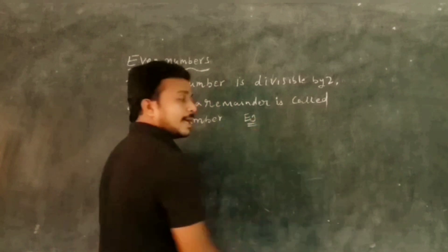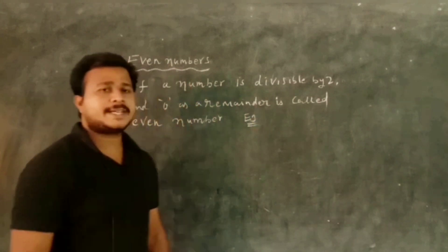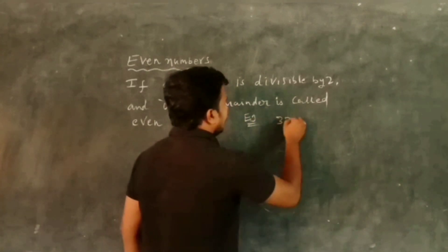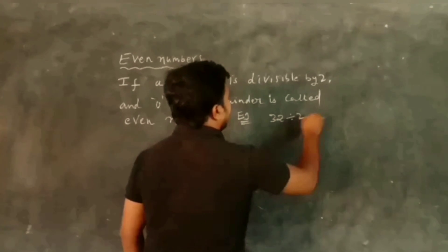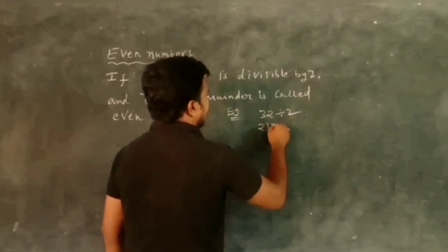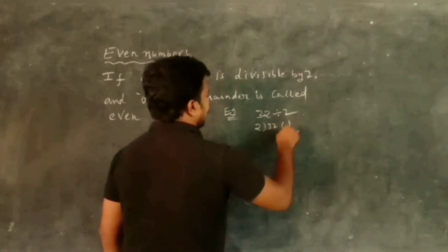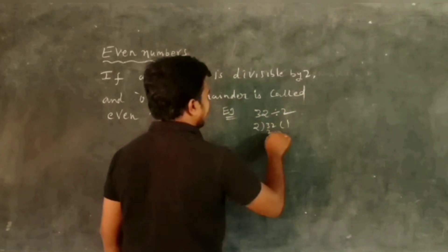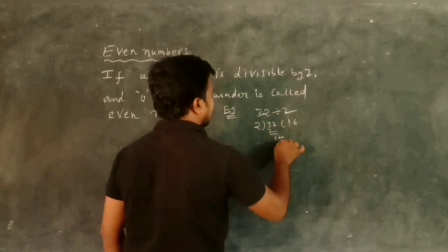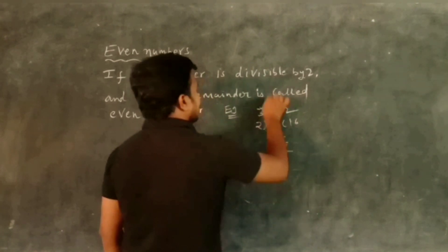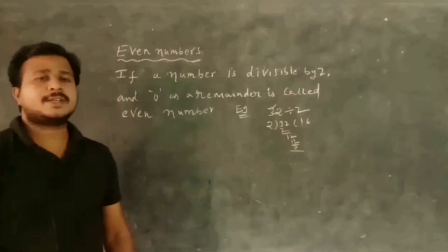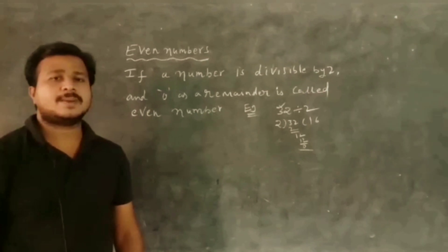Example: 32 is divided by 2. 2 ones are 2, 1; 2 sixes are 12, remainder 0. So 32 is an even number.